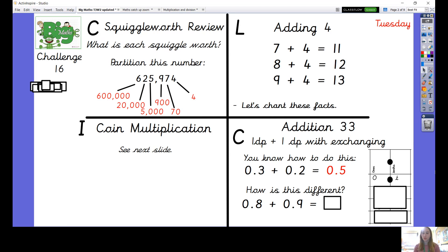Hopefully you can remember how to do that. Now I've got a calculation here and I've written the question: how is this different? I've got 0.8 add 0.9. How is that different to doing this skill? Why might it be slightly more challenging than doing 0.3 add 0.2?